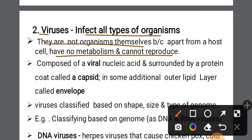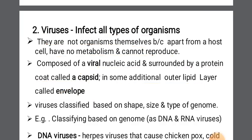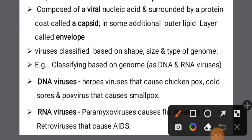Viruses are considered intermediate between living and non-living things. The virus is composed of viral nucleic acid — called a capsid — with an additional outer layer also called a protein coat or capsid. The virus carries genetic material — either DNA or RNA — in different regions. DNA viruses include poxvirus which causes smallpox, and chickenpox.